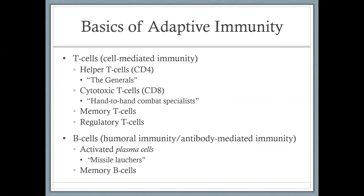Now let's move into the basics of adaptive immunity, because I think this is where things get confusing — it uses terminology you've never heard before. With adaptive immunity, you have T cells and B cells. With T cells we call this cell-mediated immunity because T cells interact with other cells directly, cell to cell.